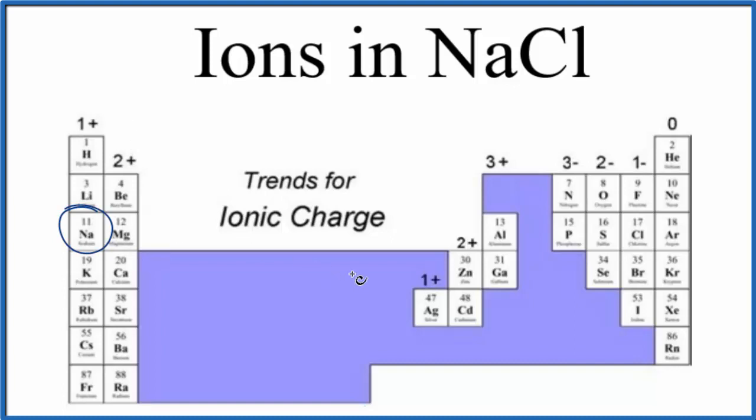Group 2 is 2 plus. Transition metals, we skip those, a little more complicated. We get over here to chlorine. That's going to be 1 minus.